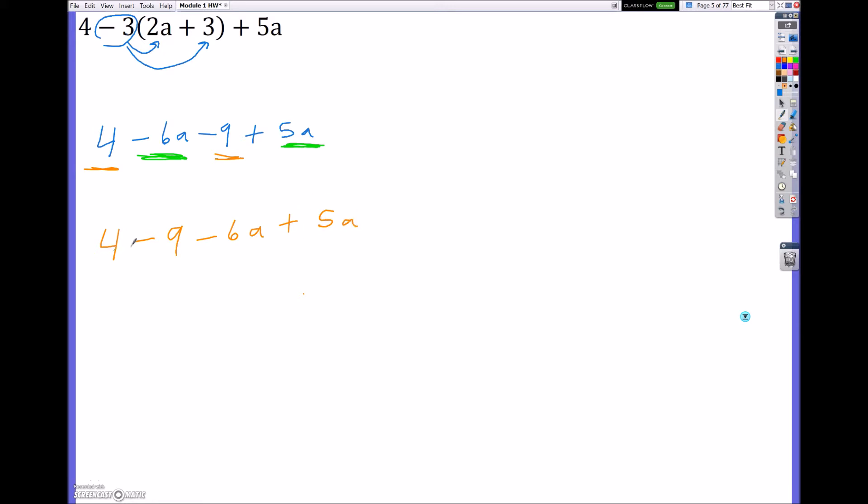So I'm going to have 4 minus 9, which is going to be negative 5, and I'm going to have negative 6a plus 5a, which means I'm going to have minus 1a left over. You could have also written it negative a minus 5. Either one is correct.